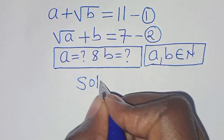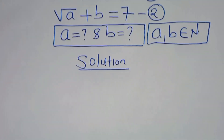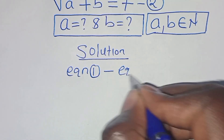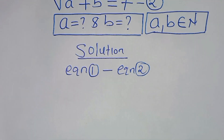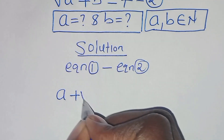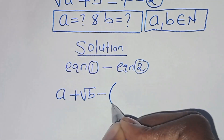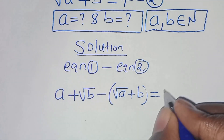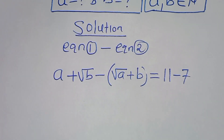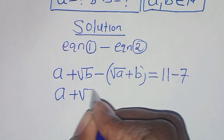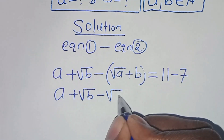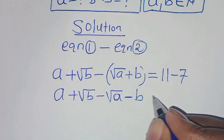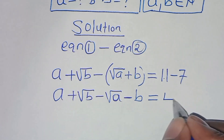Let's present the solution from here. The first thing to do is subtract equation 2 from equation 1. So this implies that we have a plus square root of b, subtract square root of a plus b, which equals 11 minus 7, giving us 4.